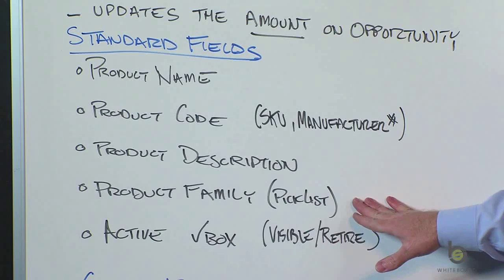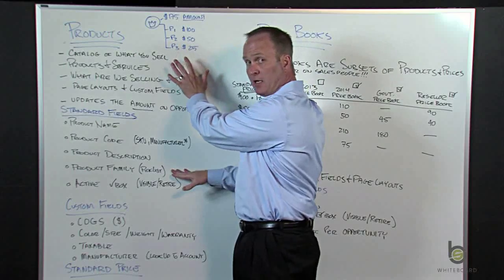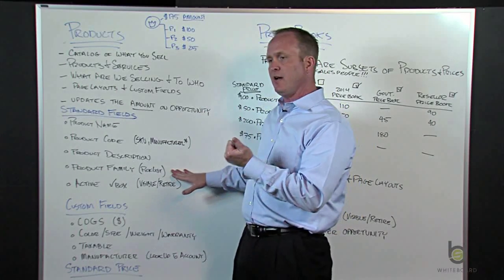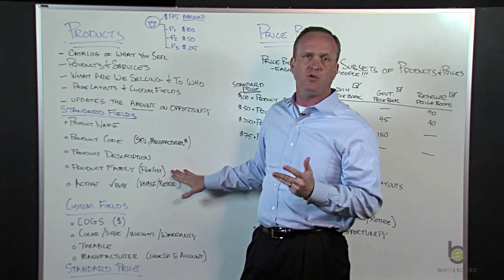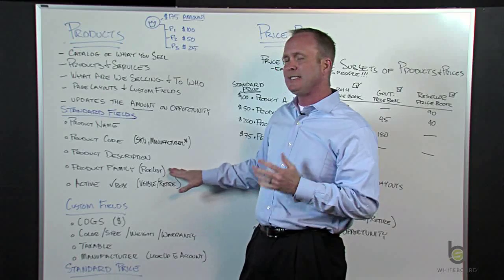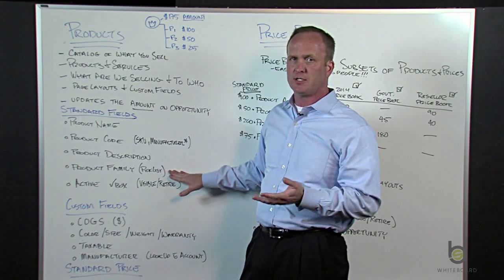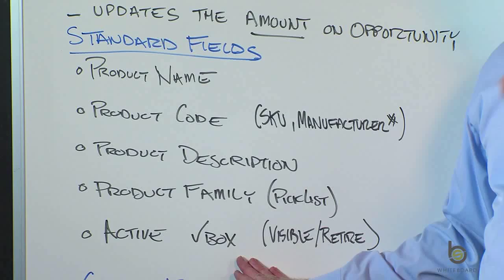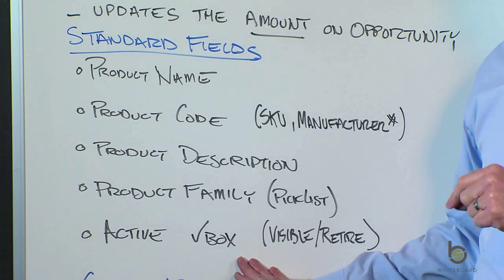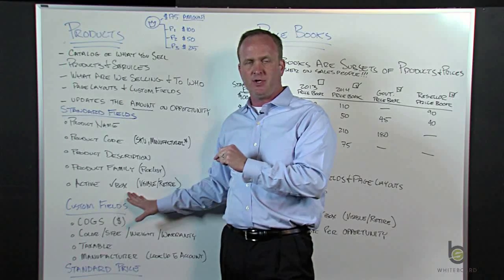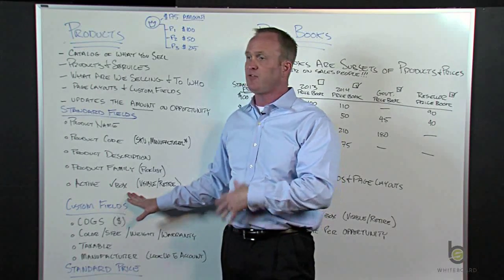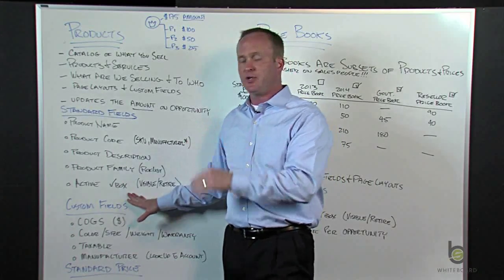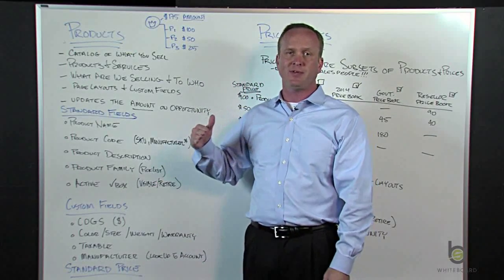Product family is a picklist — it's really to help you categorize your catalog. Think about shopping on Amazon: you want to catalog those products. You could have apparel, sporting goods, electronics, music, film, audio, whatever it might be. It's just a picklist to categorize your products to help your salespeople find stuff quicker. The active checkbox is an important little field. If it is active, it is visible to your users and they will be able to find that product and associate it to an opportunity. If you want to retire a product — maybe it's no longer made — you uncheck that box, and users will not be able to add it to new opportunities.